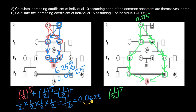But we also have to include the fact that individual one in this loop is inbred herself. We have to multiply — but not just by 0.05. We actually add one here in order to account for the increased inbreeding, so we get 1.05. We multiply by 1.05 to reflect in our calculations that individual one is inbred by 5%.